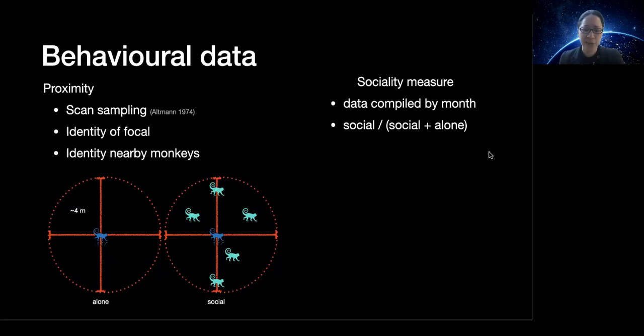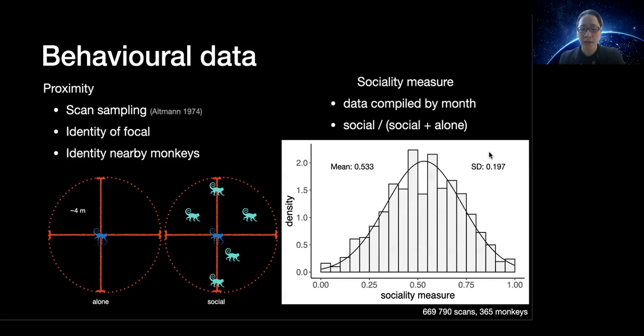Our proximity data can be turned into a sociality measure compiled by month, where we compare the time a subject spends social with the time subject spends alone. If we were to look at this sociality measure as a proportion, the proportion of time spent social, we would see that our sociality measure is normally distributed in our population, with on average individuals spending just a little over half of their time near others.